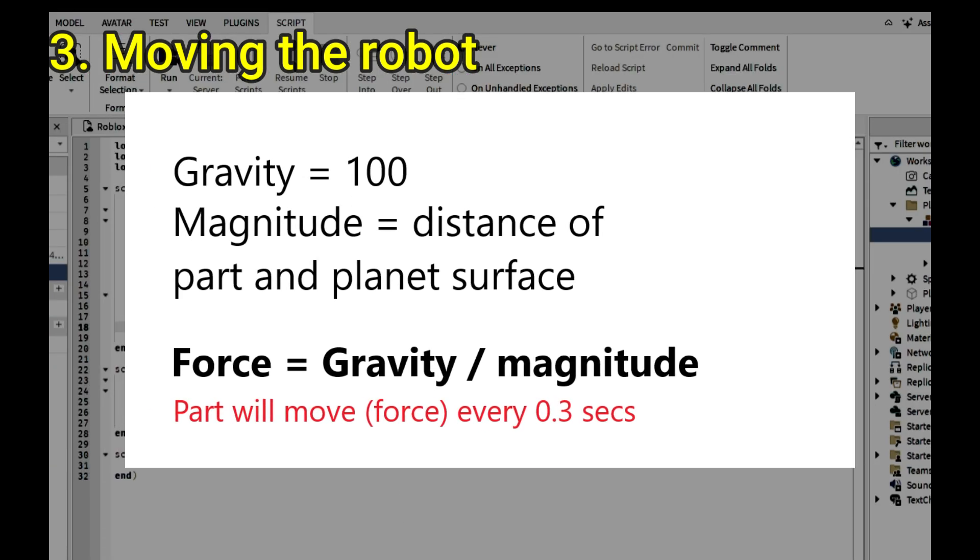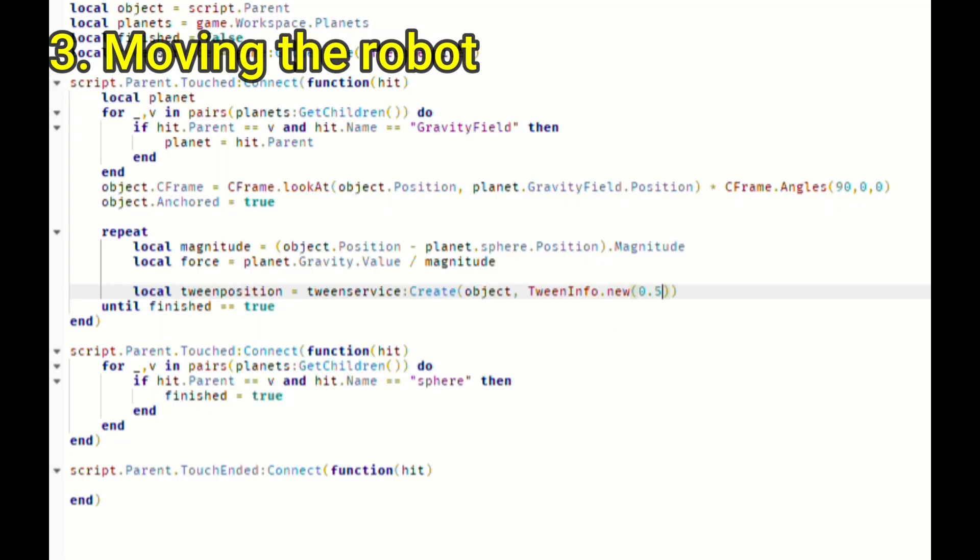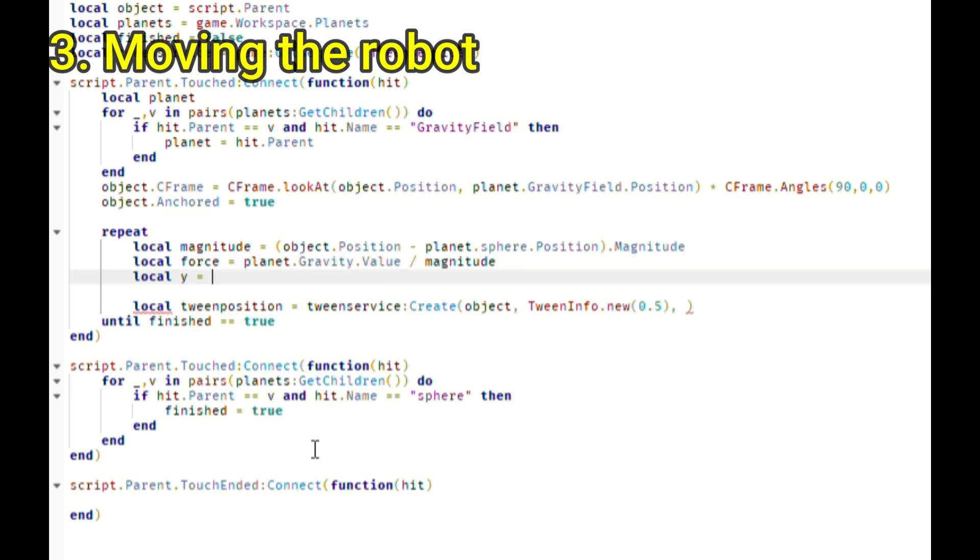I will have to get the magnitude between the part and the planet. Then create a gravity number value inside of the planet model. Then the force, dividing the planet's gravity by magnitude. Making a closer the faster system. This will make the part go down the y-axis by force every 0.3 seconds.